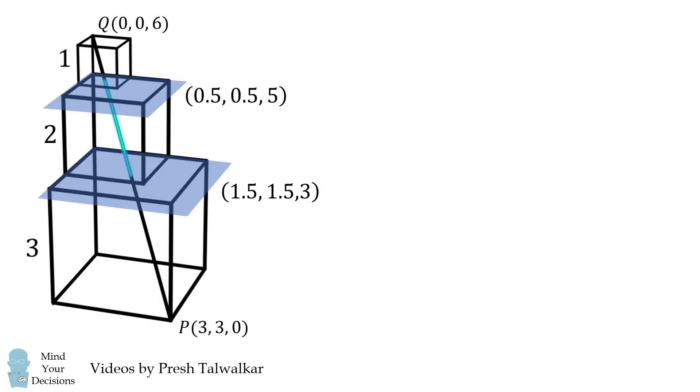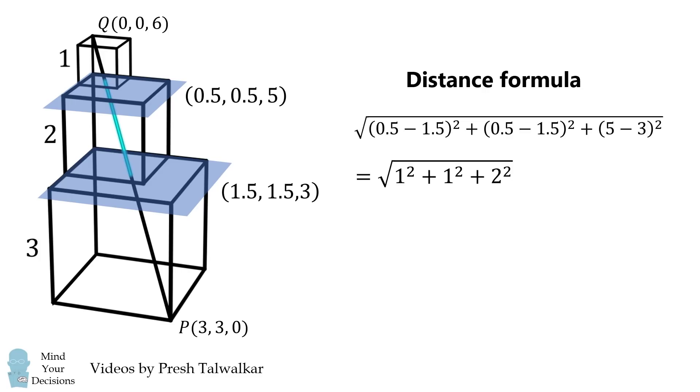We now can solve for the length of this line segment by using the distance formula. We substitute in the coordinates and then we simplify. It'll be equal to the square root of 1 squared plus 1 squared plus 2 squared, and this simplifies to be the square root of 6. And once again, we get the same answer.